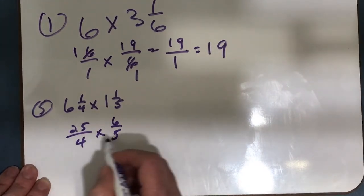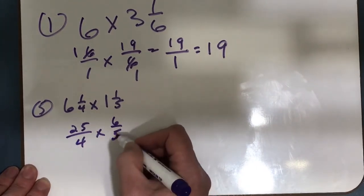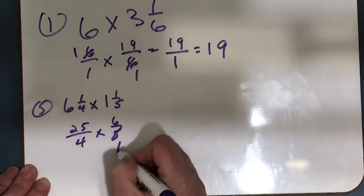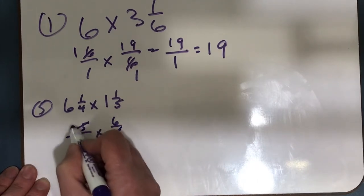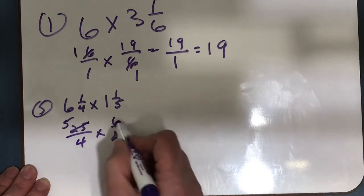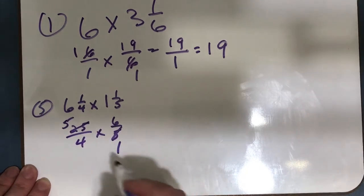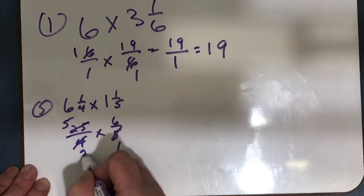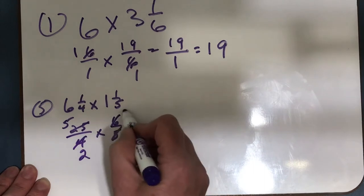So I can divide 25 and 5 both by 5. 5 divided by 5 is 1, 25 divided by 5 is 5. 4 and 6, I can divide both of those by 2. 4 divided by 2 is 2, 6 divided by 2 is 3.